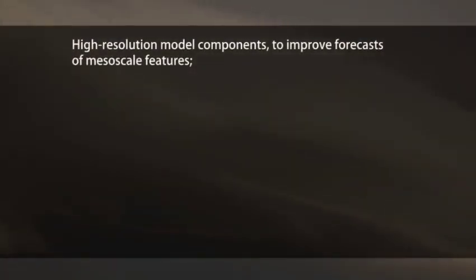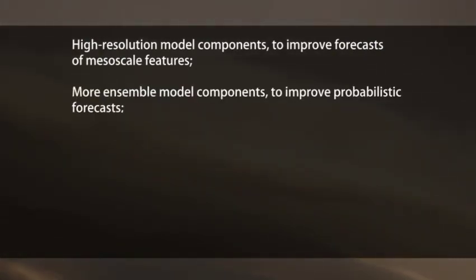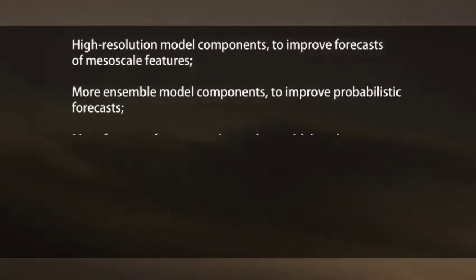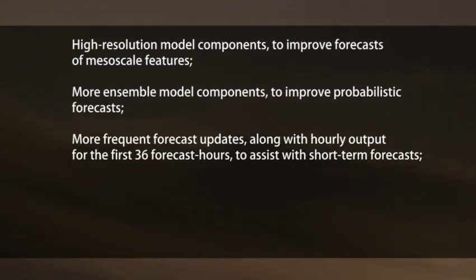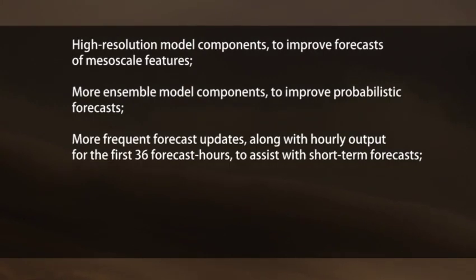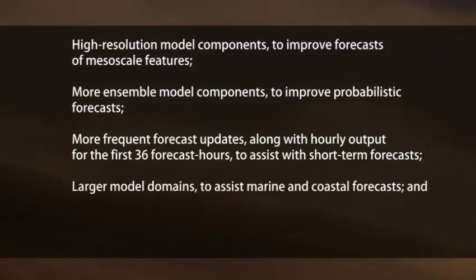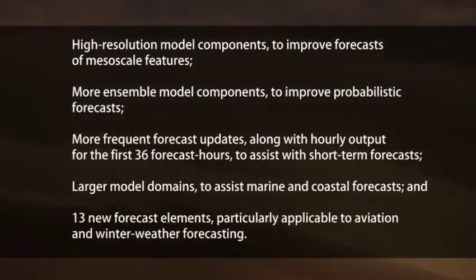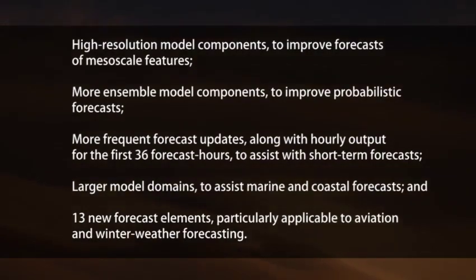Version 3 of the National Blend of Models includes the following features: high-resolution model components to improve forecasts of mesoscale features; more ensemble model components to improve probabilistic forecasts; more frequent forecast updates along with hourly output for the first 36 forecast hours to assist with short-term forecasts; larger model domains to assist marine and coastal forecasts; and thirteen new forecast elements particularly applicable to aviation and winter weather forecasting.